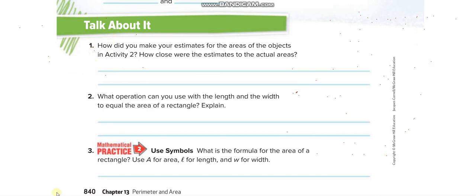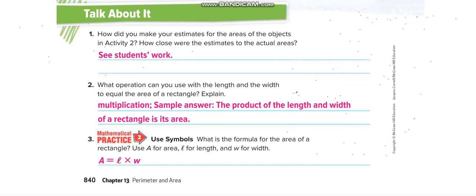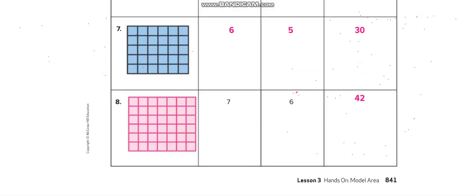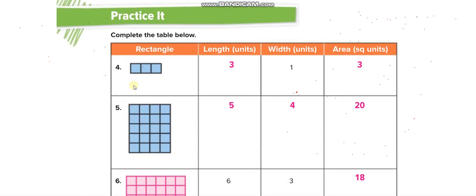For the next questions: how did you make your estimate? That question is about estimation — you can skip it if needed. Which operation do we use? Of course we use multiplication. We multiply length times width. The formula is: Area = length × width. On the next page, the same thing — 3 × 1 = 3, and 5 × 4 = 20.